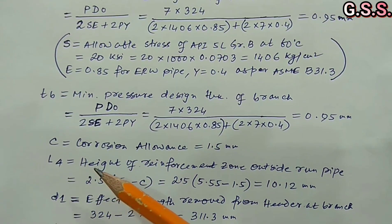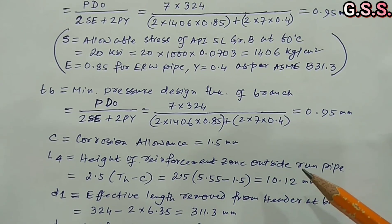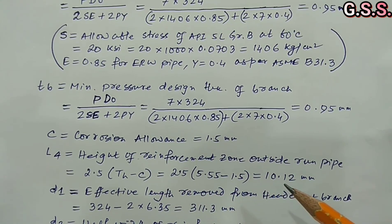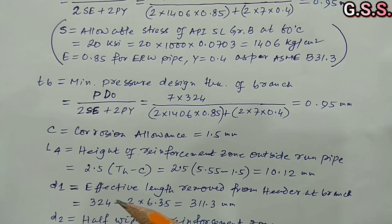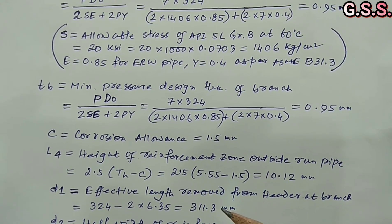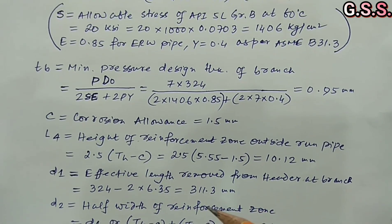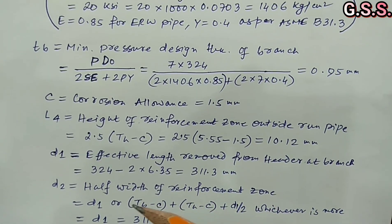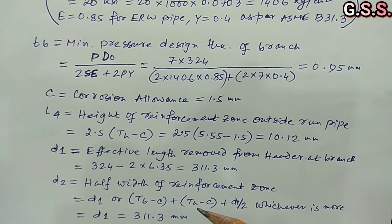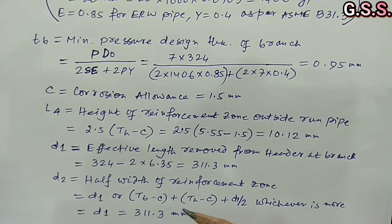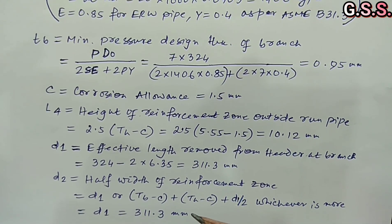Capital L4 = height of reinforcement zone outside run pipe = 2.5 × (capital TH − C) = 10.12 mm. Small D1 = effective length removed from header at branch = branch OD − 2 × branch thickness = 311.3 mm. Small D2 = half width of reinforcement zone = the greater of small D1, or (capital TB − C) + (capital TH − C) + (small D1 / 2), giving D2 = D1 = 311.3 mm.